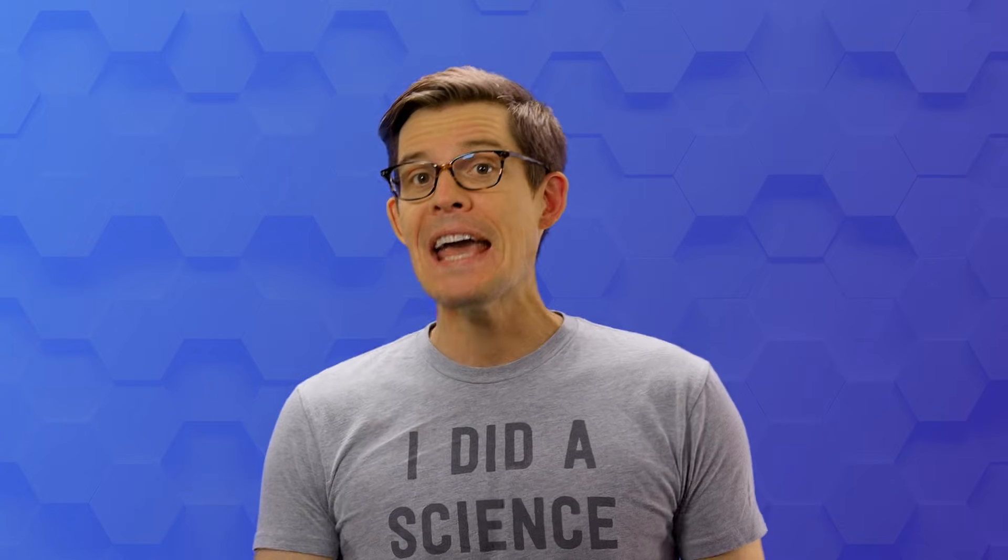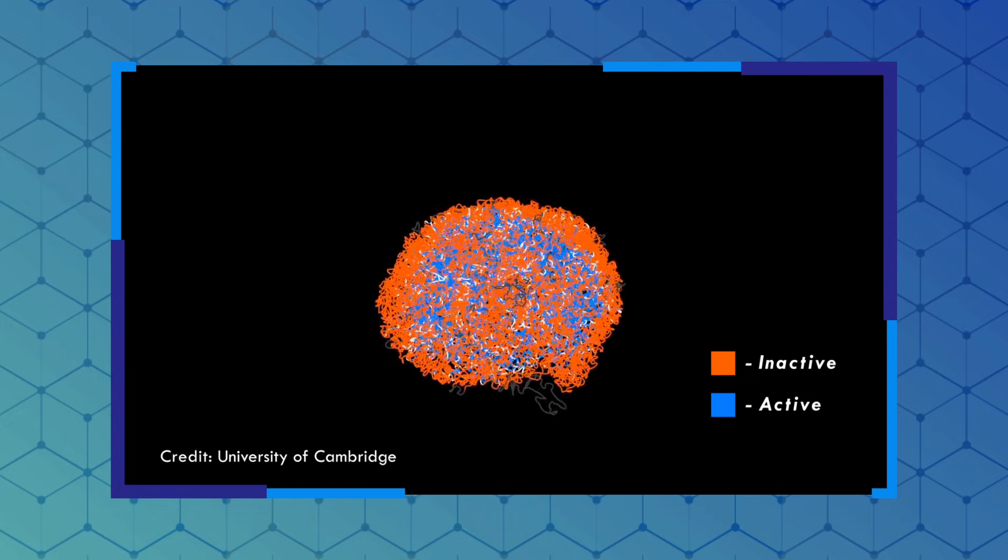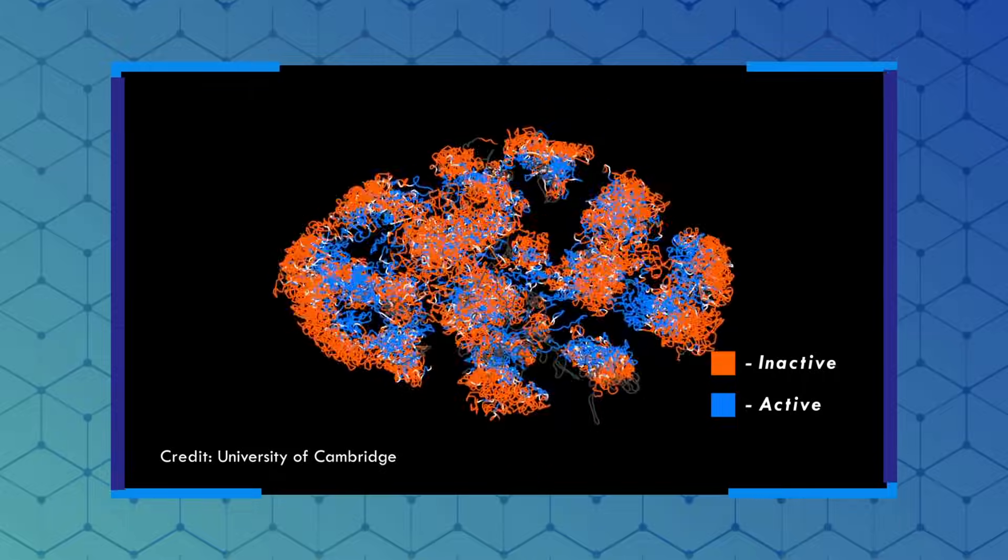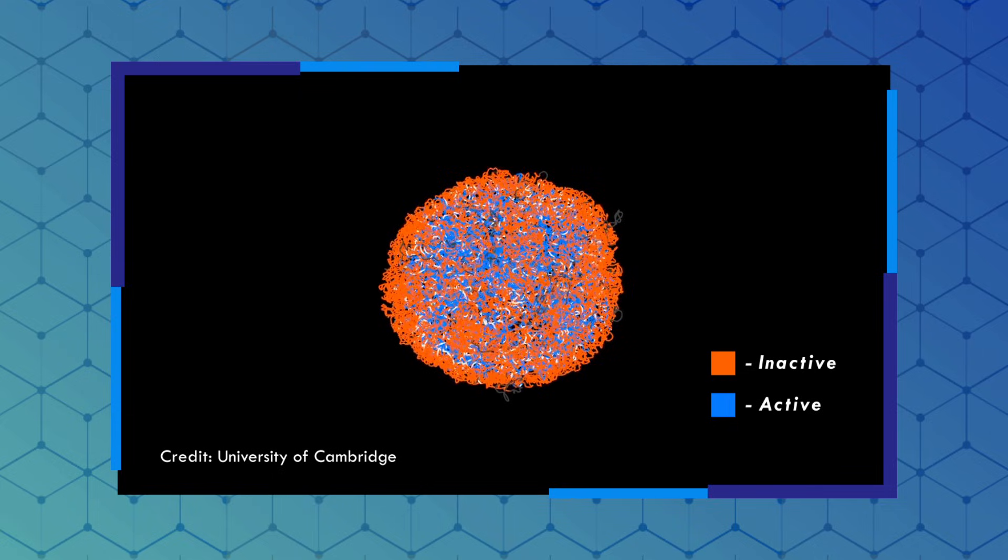Turns out each chromosome hangs out in its own territory inside that web. The part of the chromosome that's being read and making stuff is near the center, while DNA that's not being read is usually closer to the edge, wound up tighter. The two copies of each of your chromosomes aren't even next to each other.